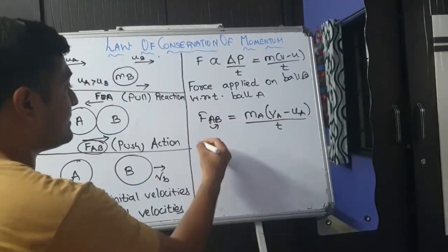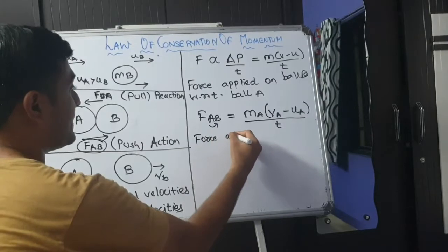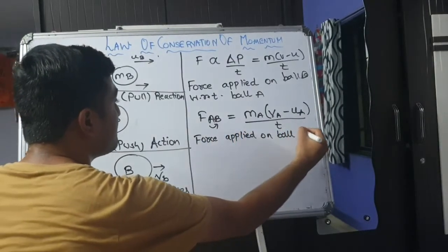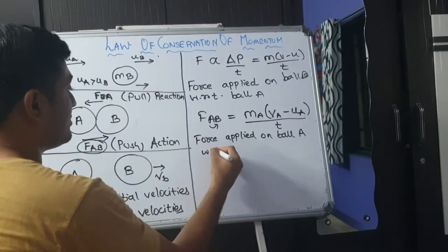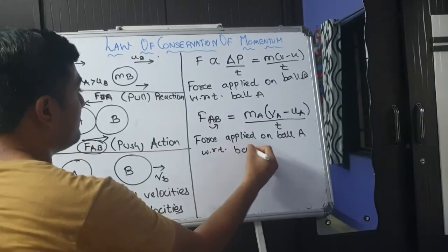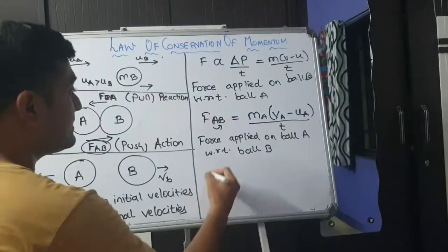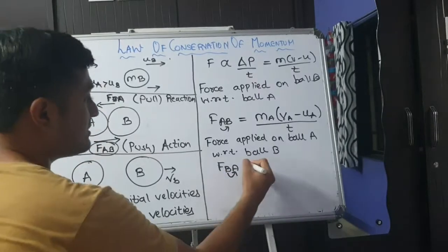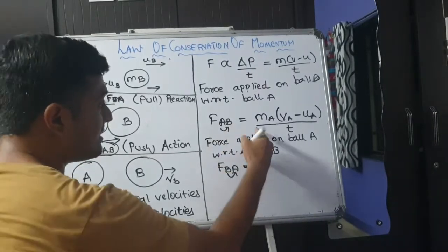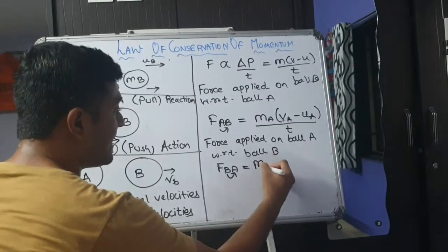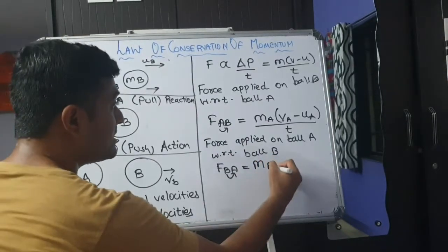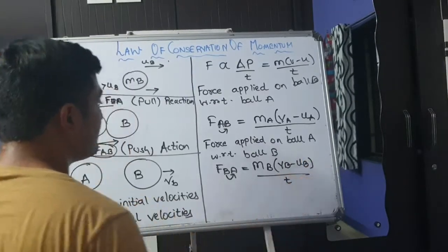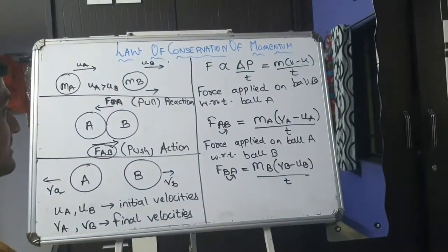Now let us consider another force. Force applied on ball A with respect to ball B. So what will be this force? That is FBA. Because B is applying force on A. So we will rewrite the same equation as we have written for FAB. That is mB, VB minus uB divided by t. Now this thing is clear.